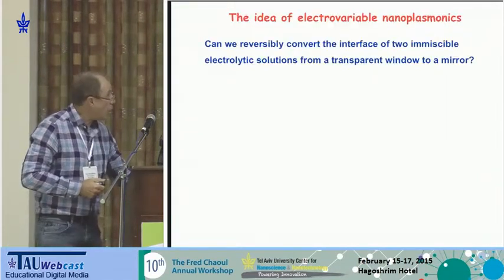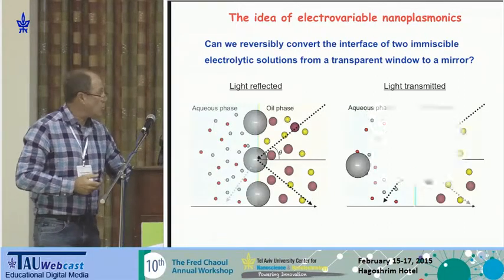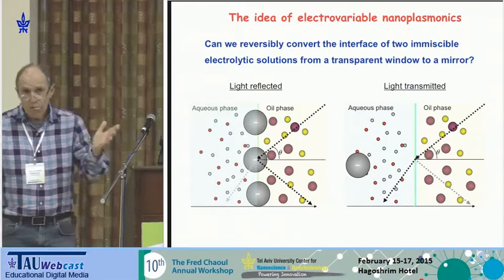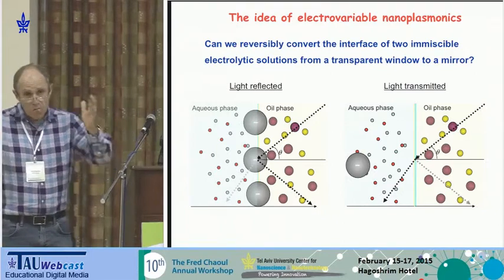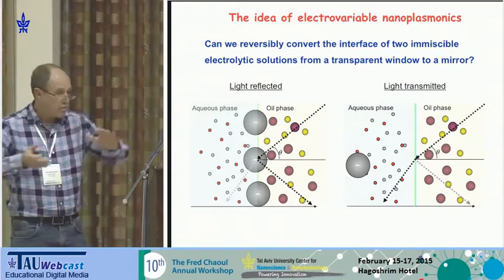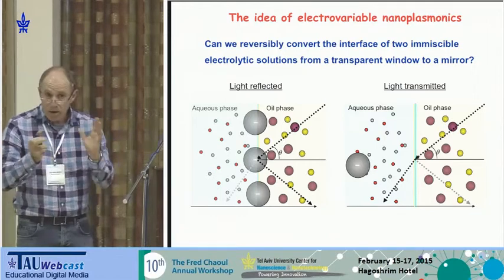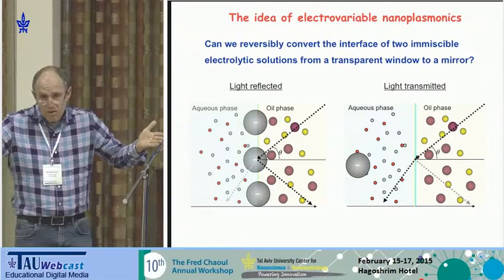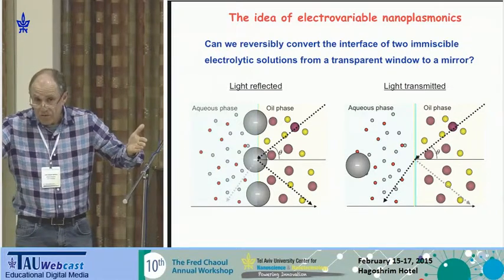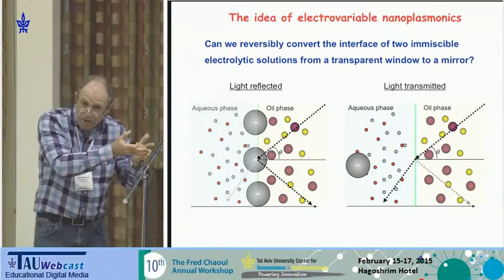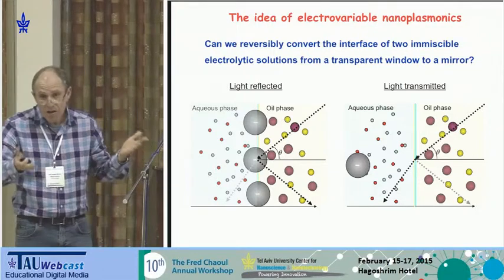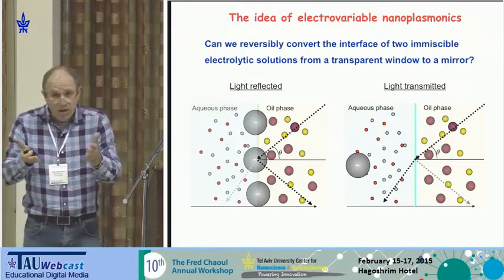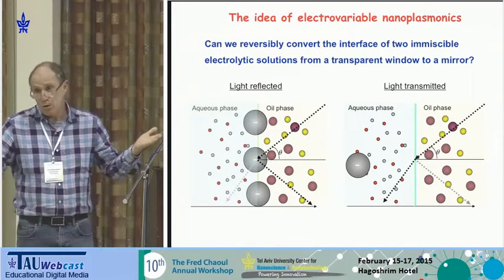Our dream was actually different. Our idea was to create a system where nanoparticles sit in the upper phase at low concentration — invisible, a transparent system — then apply an electric field, bring all nanoparticles to the surface, and have an ideal mirror: an electro-tunable mirror operated by just half a volt.